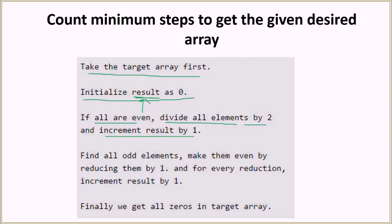If there are odd elements, we make them even by reducing their value by one, and for every such reduction we increment the result by one. This is the reverse of the increment operation. We continue until we reach all zeros in the target array.